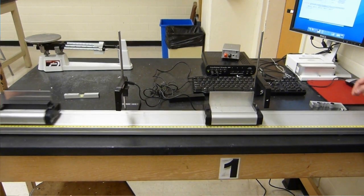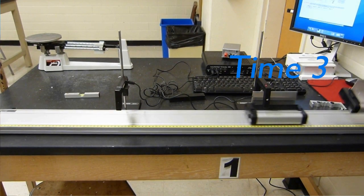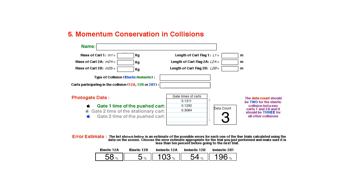Let's see that again. First, the push cart passes through the gate, then the stationary cart passes, and then the push cart finally passes through. Make sure you record the times in the proper order in your manual.